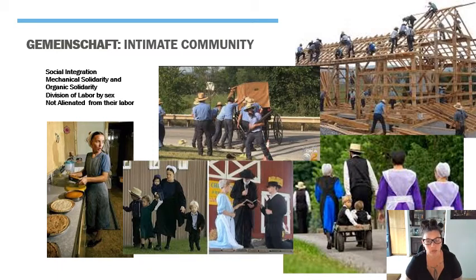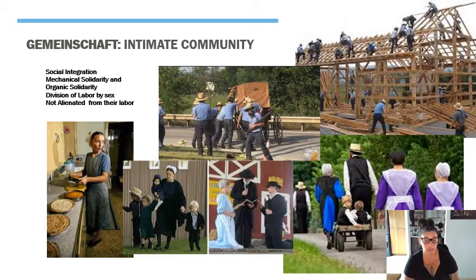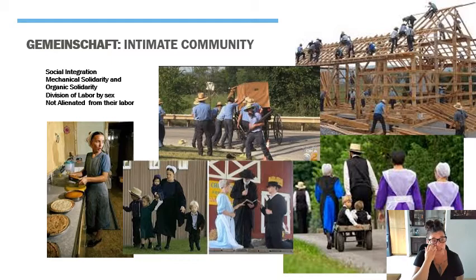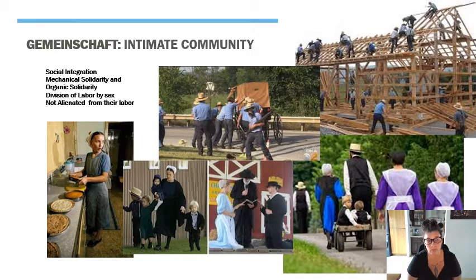They always know what everybody is doing, which is what makes them such a great example of Gemeinschaft. They are also not alienated from their labor — the pies she's making are for her community or to sell, and the barn they're raising is for a community member. They all get together as a community and build a house for the next person who needs it. So they're not alienated from their labor and they have almost no real sense of anomie, which means they are very socially integrated into their Gemeinschaft society.